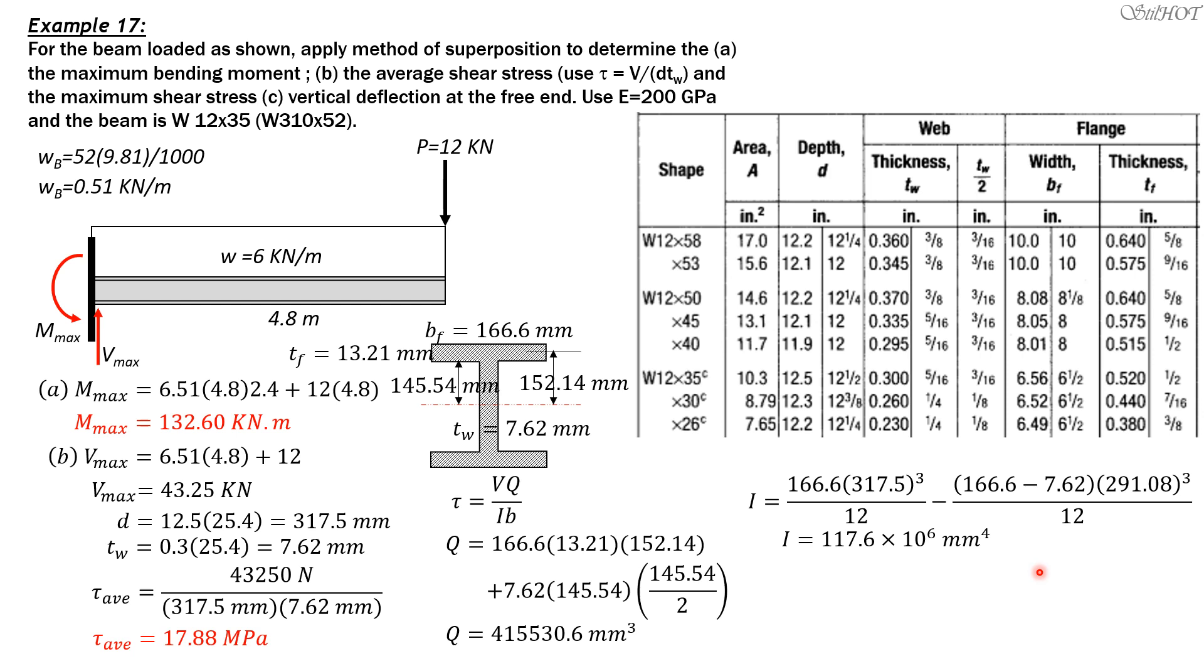The moment of inertia is 117.6 times 10 to the 6 millimeters to the fourth. So we now substitute into the formula. Tau max equals 43,250 times Q, 115,530.6, divided by moment of inertia times b. b is the thickness at the neutral axis, which is 7.62, the thickness of the web. The unit is megapascals and this is expected to be higher than the average value. It equals 20.06 megapascals.